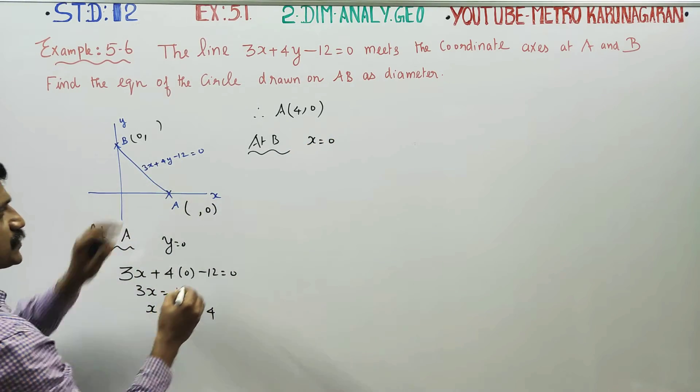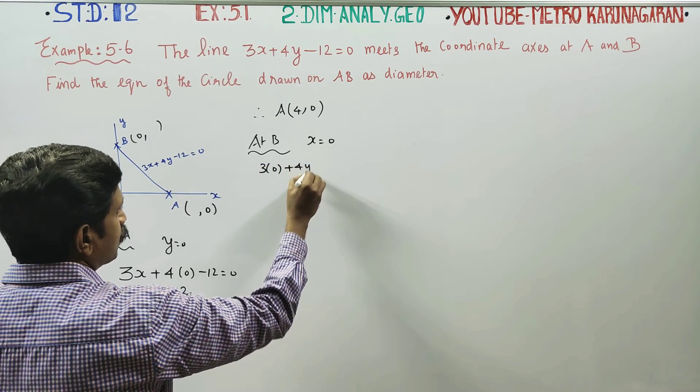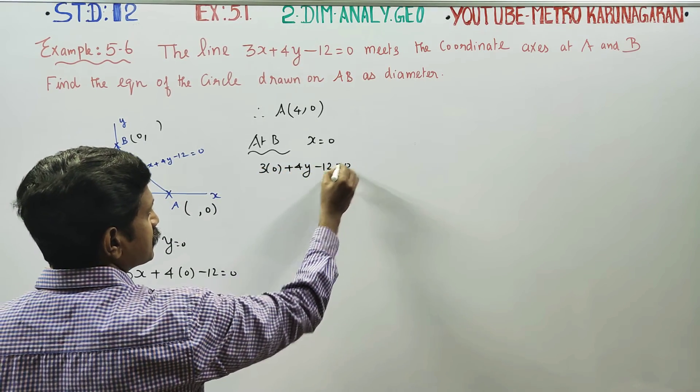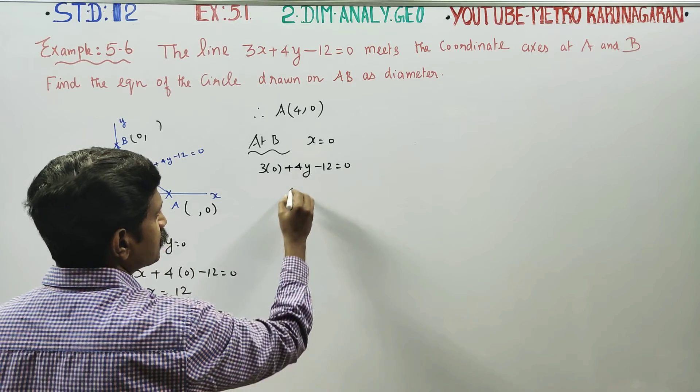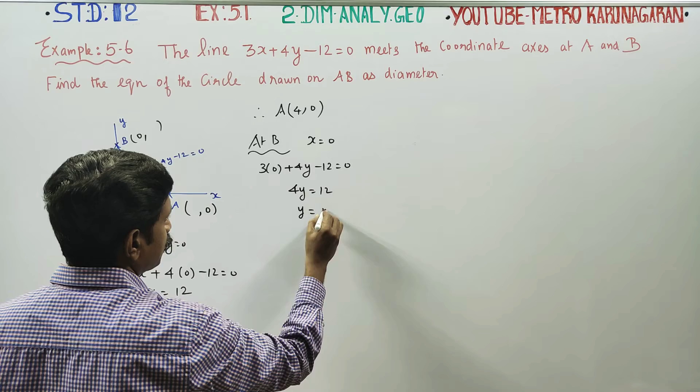Substituting x = 0 into the equation: 3(0) + 4y - 12 = 0, so 4y = 12, therefore y = 3.